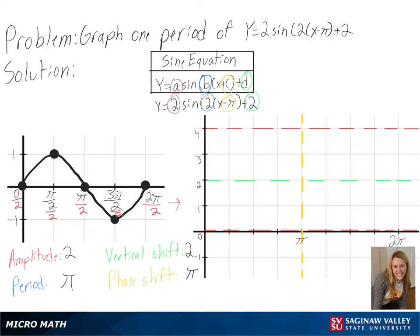While these would be our original points, we moved pi units to the right, so we will actually be starting at pi, and then move up to 5 pi over 4, through 3 pi over 2, down to 7 pi over 4, and back up to 2 pi.